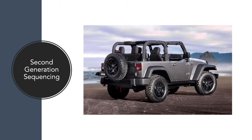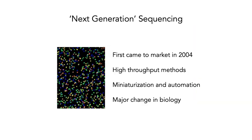The big change was with the development of so-called second generation sequencing, which has got a number of particular characteristics. This next generation or second generation sequencing can refer to quite a number of different products. The first of them really came into the market in 2004, and they really took off in the late 2000s. They are all characterized by high throughput methods, especially miniaturization and automation. The sheer amount of data that these technologies allowed led to a major change in biology.